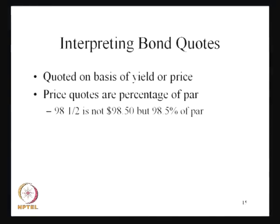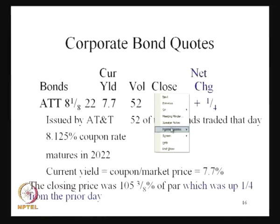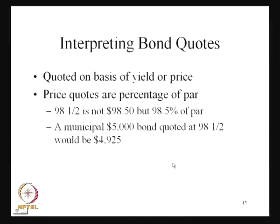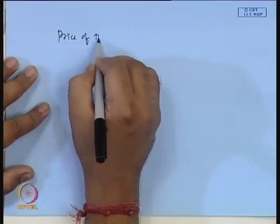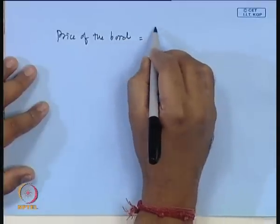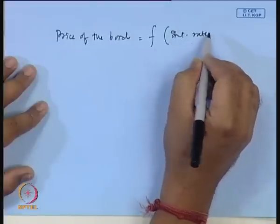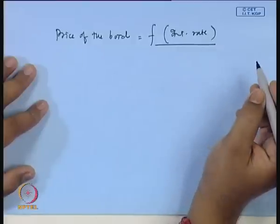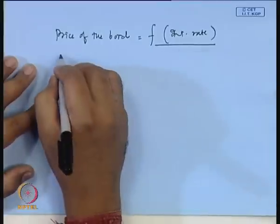Then coming back to whenever we do the investment in the bond, how this particular bond investment quotes are looking like? Whenever we talk about the bond quotes, these are basically quoted on the basis of their yield or their price, and the price of the bond changes on the basis of the change in market interest rates. The quotation is basically mentioned in this way. For example, if you talk about the price quote, the price of the bond already — it is basically a function of interest rate measurably. We will be discussing those things in detail in the next class, but here how this price quote is made?